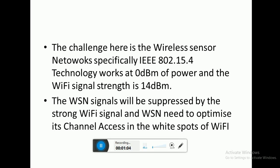When the WSN signals are transmitted during Wi-Fi transmissions, the WSN signals will be suppressed by the strong Wi-Fi signal. Therefore, the WSN needs to optimize channel access in the white spots of Wi-Fi — that is, the slots where Wi-Fi is not operating are the slots the WSN needs to utilize.